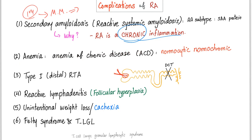Anemia — anemia of chronic disease, normocytic normochromic, is the most common type of anemia seen in patients with rheumatoid arthritis.